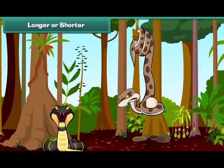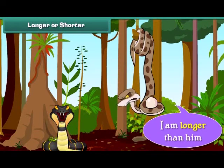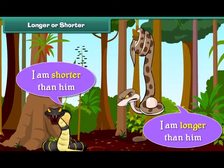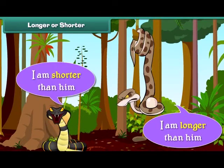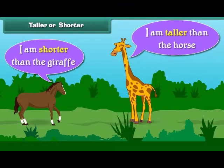When two objects are not of the same size, we compare them. I am longer than he is. I am shorter than him. I am taller than the horse. I am shorter than the giraffe.